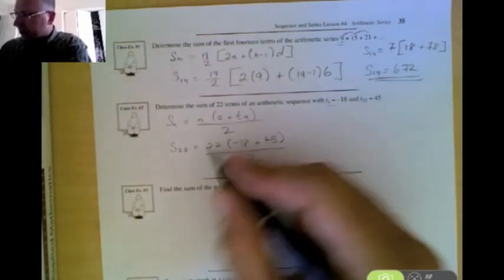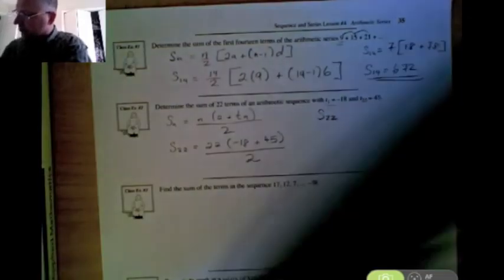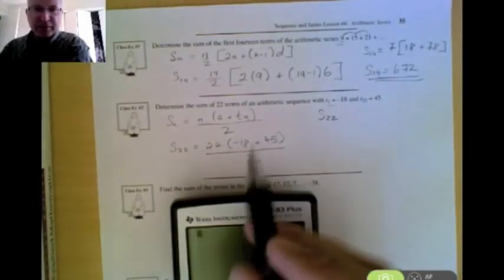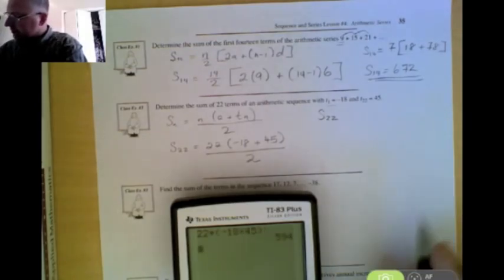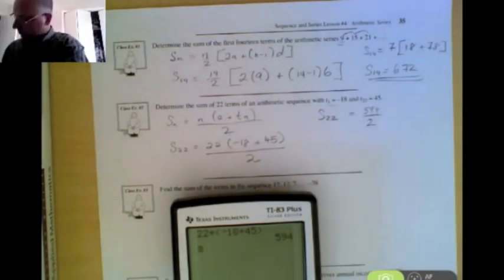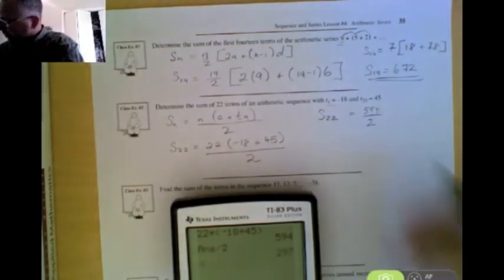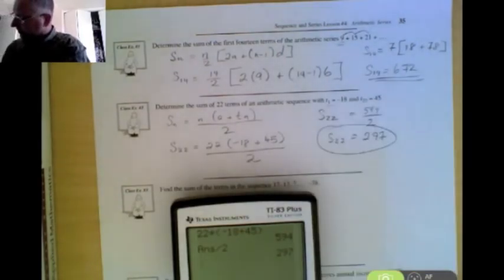Now, some of you are going to want to try to type this all in at once in your calculator. I'm going to suggest you don't do that. I'm going to suggest we do the top row first. We go 22 times, in brackets, negative 18 plus 45, and we hit enter. That gives us 594. So now we're going to take 594 and we're going to divide it by 2, and it's going to tell us the sum of the first 22 terms is 297.